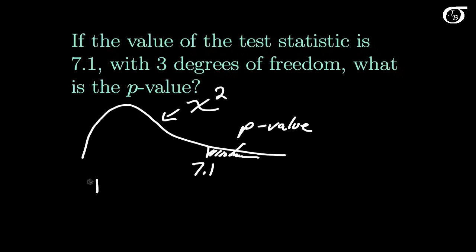And so using our table, we found that the p-value, the area to the right of our test statistic, is less than 0.10 but greater than 0.05. If we wanted to get more precise than that, we'd have to use statistical software. So let's use R to find that value.